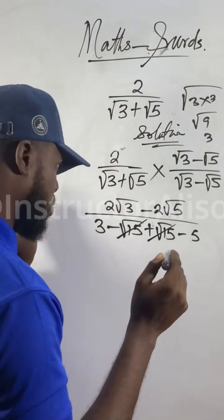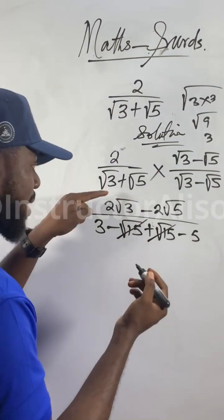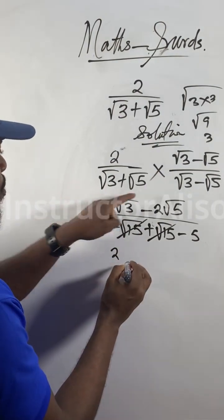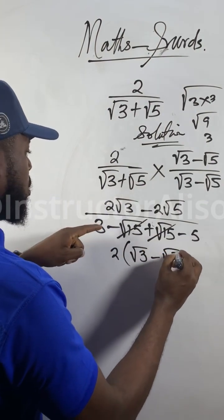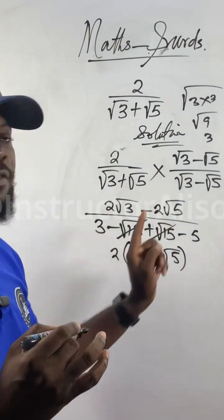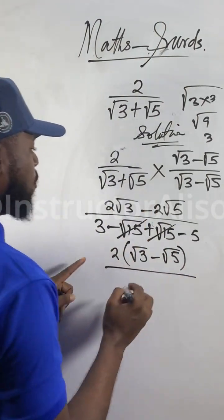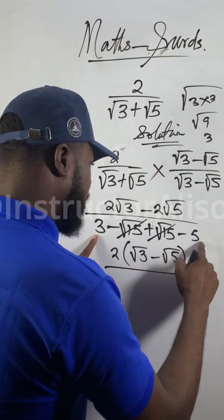Factor out the 2. This is minus √15 plus √15, which gives us zero. Minus something plus something gives zero. So on the numerator now, take the 2 out and put the rest inside brackets. Okay, because this one times this one will give you this one.